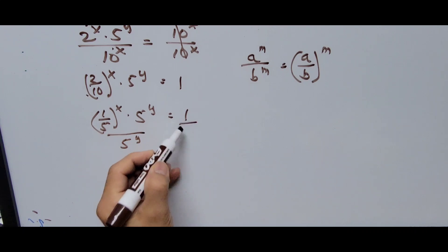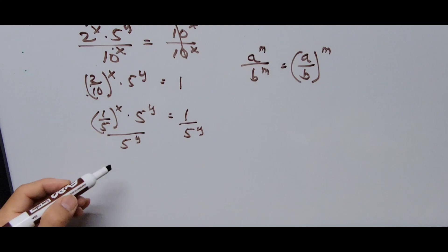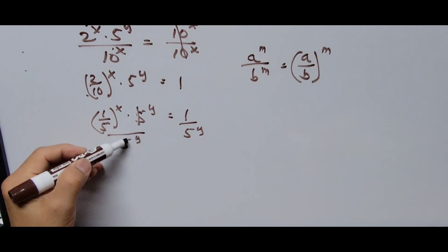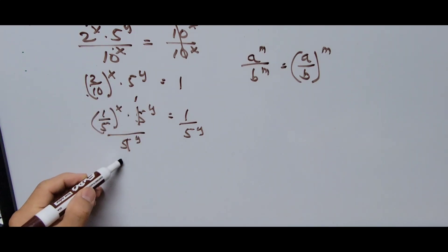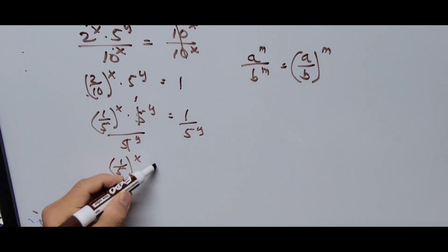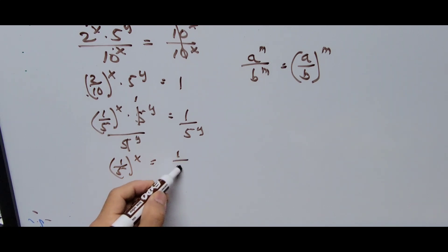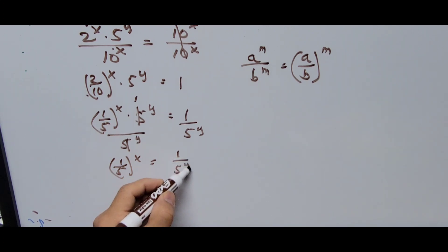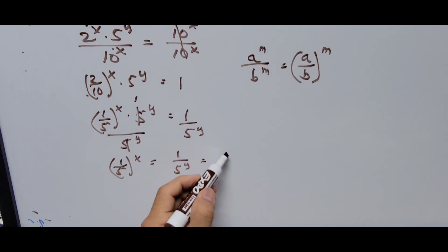After dividing, the 5^y on the left cancels, giving us (1/5) to the power of x equals 1 divided by 5 to the power of y. This can be written the same way as (1/5) raised to the power of y.